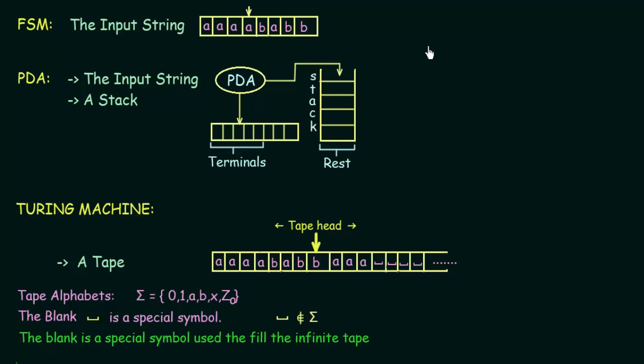Let us see what were the data structures that we had in finite state machines and push down automata, and let us see what is the kind of data structure that we will have in Turing machines. In the case of finite state machines, which accepted the regular languages, the data structure that we had was only the input string.